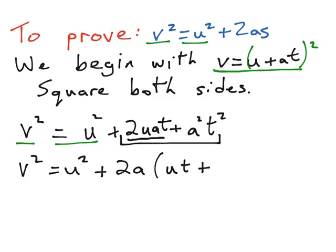Now we use the fact that we have an invisible 1 in front of the a squared t squared. So we then say 2 divided into that 1 will give us a half, a divided into a squared will leave us with the letter a, and then we have t squared.